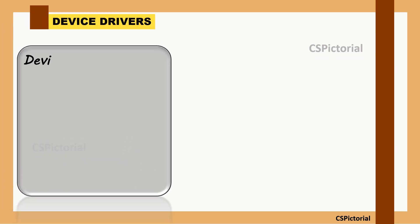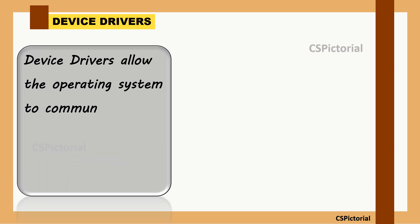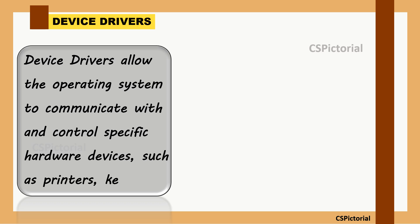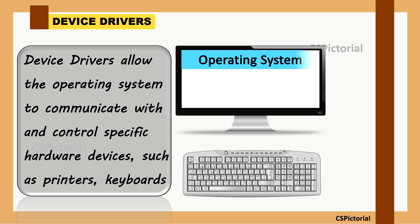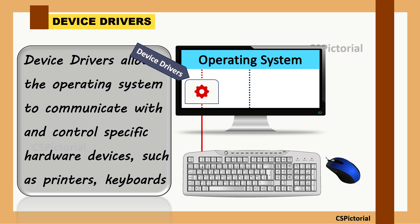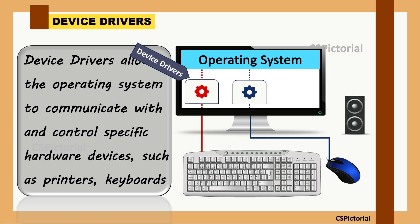Device drivers allow the operating system to communicate with and control specific hardware devices such as printers, keyboards, and more. When you use a hardware device, a request is sent from the operating system to the device driver, which acts as a bridge or middleman. It converts general commands from the OS into specific low-level instructions that the hardware understands. All hardware devices like keyboards, mice, network adapters, and printers rely on drivers to communicate with the operating system.